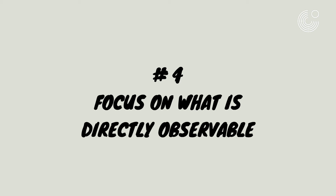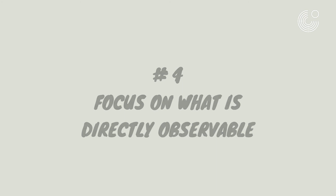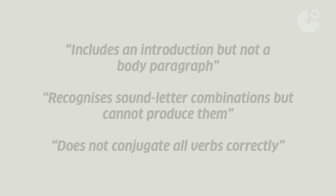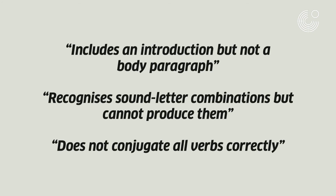Developmental rubrics start out from a firm belief that all students are capable of achieving, and seek to highlight what they achieve as opposed to what they have not done. Non-observable or negative descriptions may look like this.